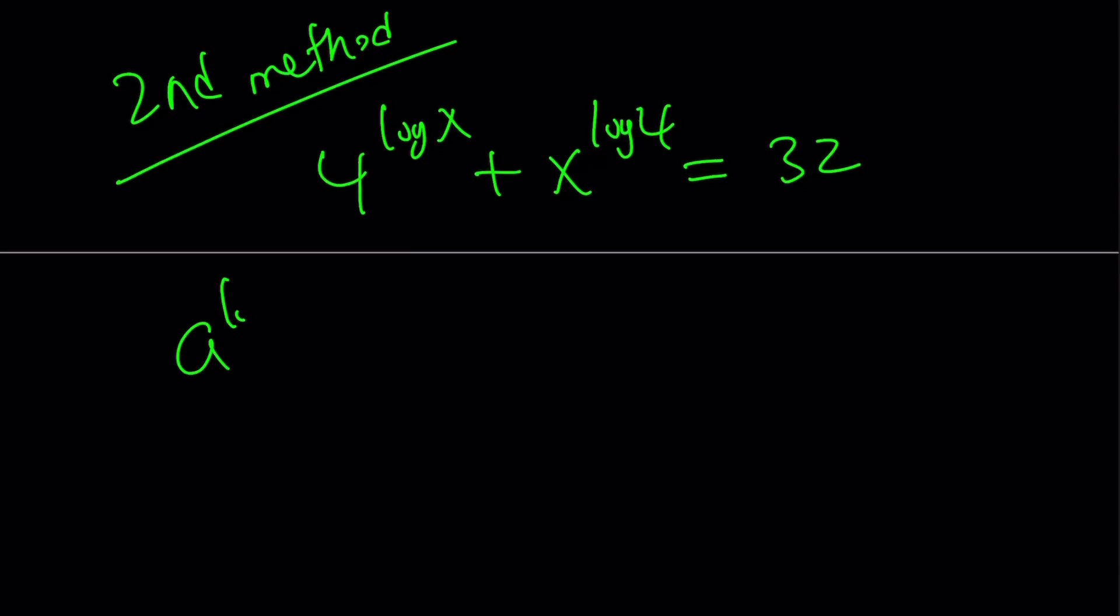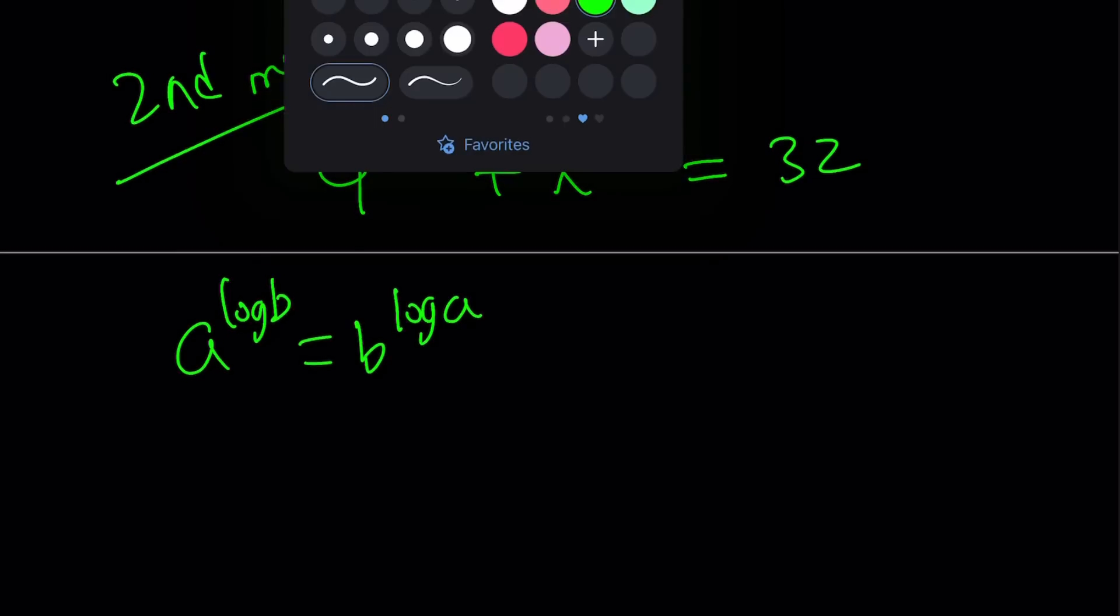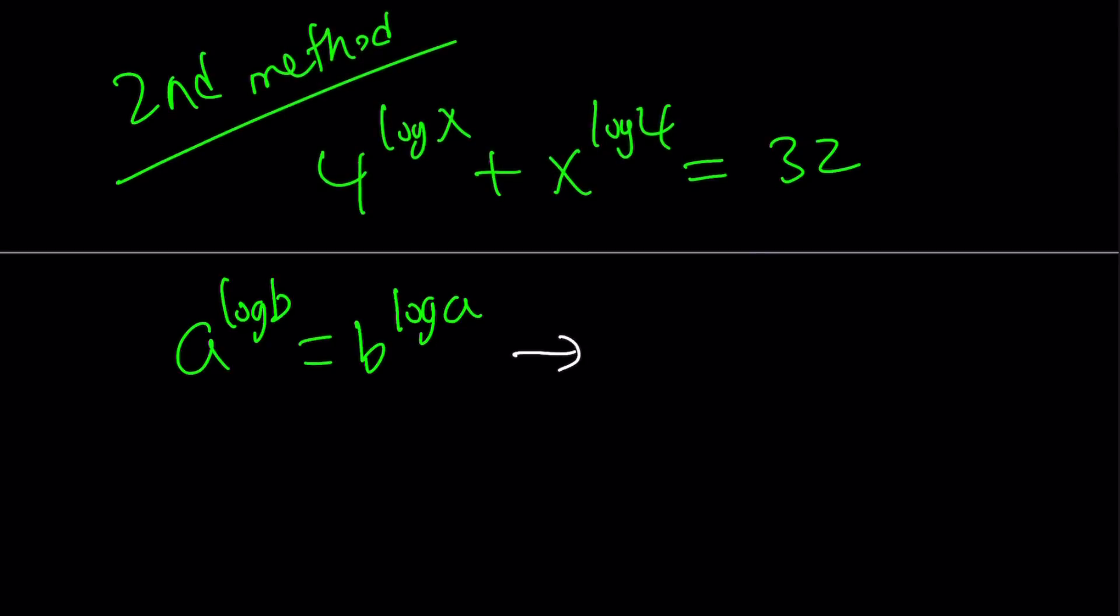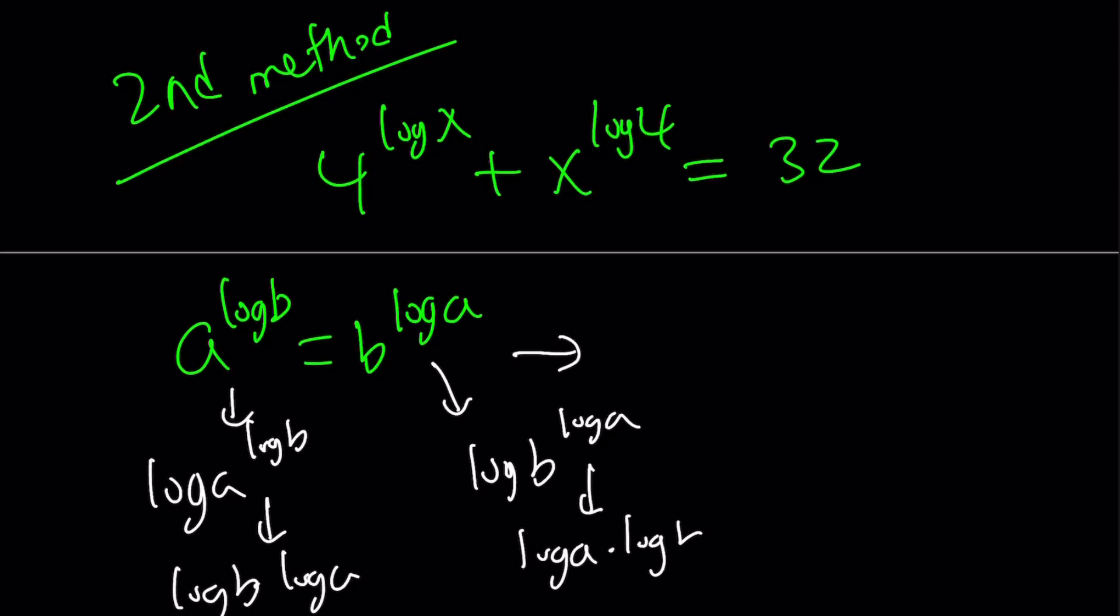a to the power log b is equal to b to the power log a. Now, why is this true? And we proved this in another video, but this is true because these expressions are equal because their logs are equal. If you log this, you get log a to the power log b. If you log this, you get log b to the power log a. This becomes log b times log a, and this becomes log a times log b, and they're equal. Therefore, the original expressions are equal.